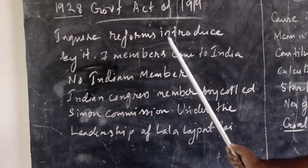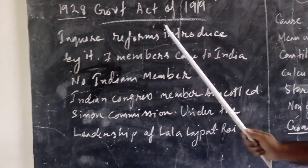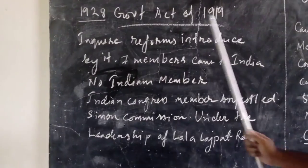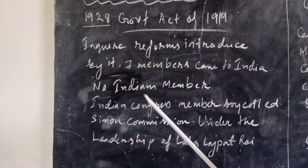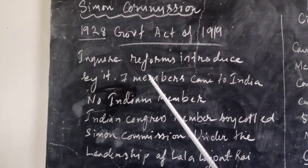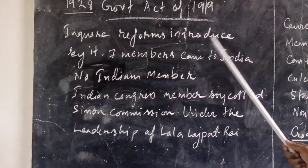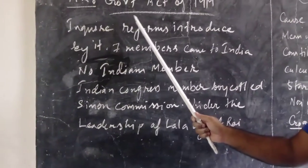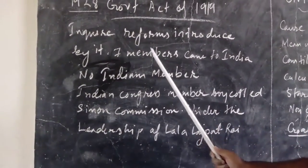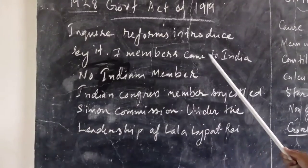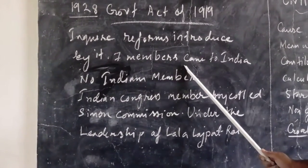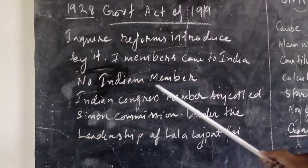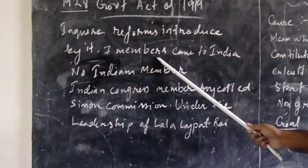In 1928, those 7 members were sent to India by the British government to enquire about the reforms introduced under the Government of India Act. But what happened? Among those 7 members, no Indian members were included.